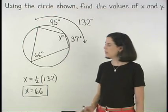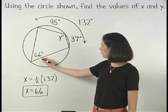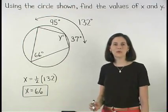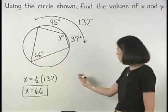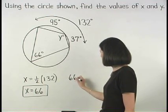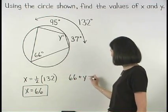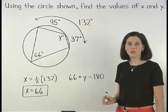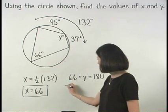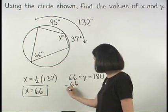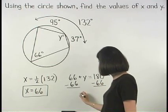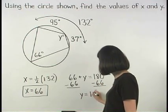This means that the angles that measure 66 degrees and y degrees are supplementary. So we can set up the equation 66 plus y equals 180. Solving from here, we subtract 66 from both sides, and we find that y equals 114.